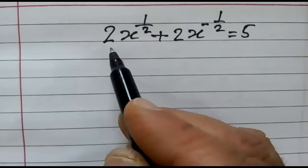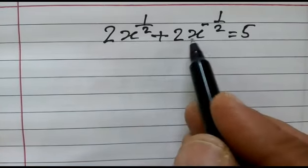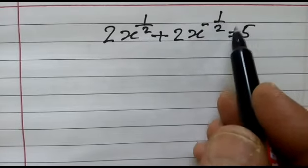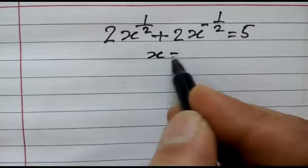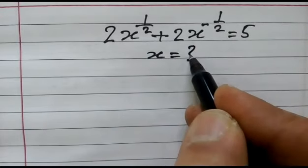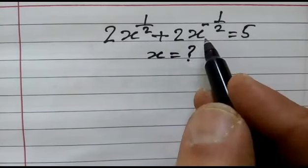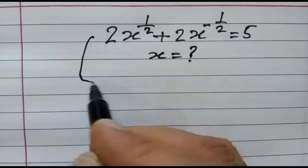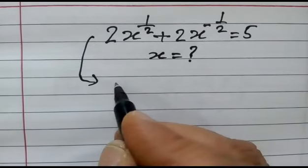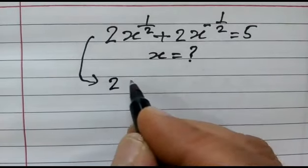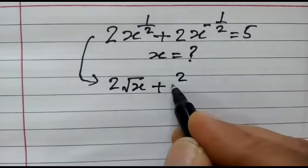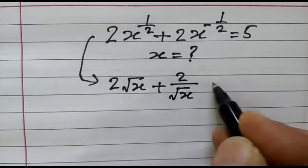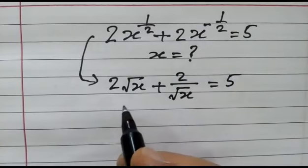Hi friends, we have equation 2 into x to the power half plus 2 into x to the power minus half is equal to 5. We have to find out value of x or we can say we have to solve this equation. So, we will change this equation as 2 square root of x plus 2 over square root of x is equal to 5.